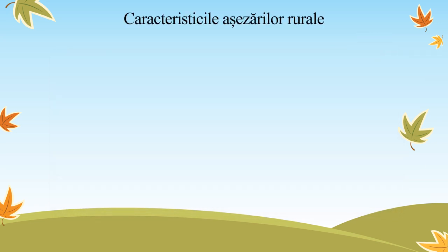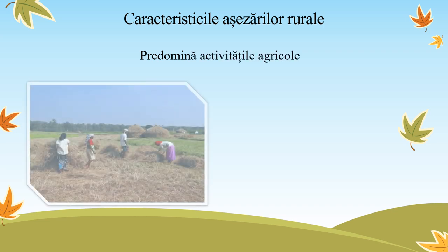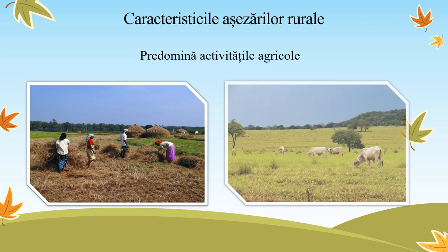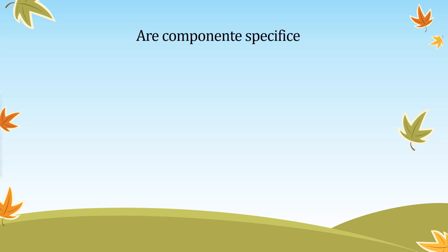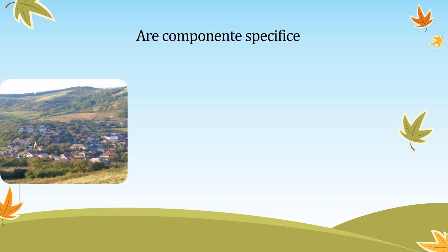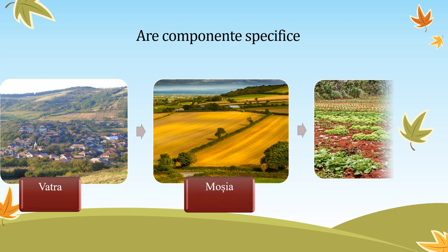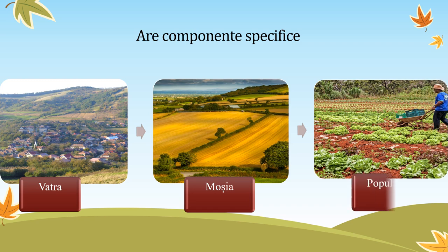Așezările rurale sunt cele mai vechi așezări umane în care predomină activitățile agricole de tip cultura plantelor și creșterea animalelor. Are componente specifice: vatra satului, zona în care sunt concentrate casele; moșia satului, reprezentând terenul agricol; și populația, cea care a construit vatra și muncește moșia.